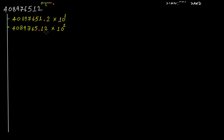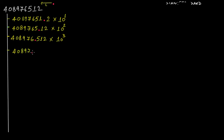If you multiply this decimal number with 10 to the 2nd power (that is 100) you get back the original number. I take this decimal point and move towards the left by one more digit, so this becomes 408976, with the decimal point here and 512 after it — this is 10 to the third power. Moving one more digit left gives 40897, with 6512 after — this is 10 to the fourth power.